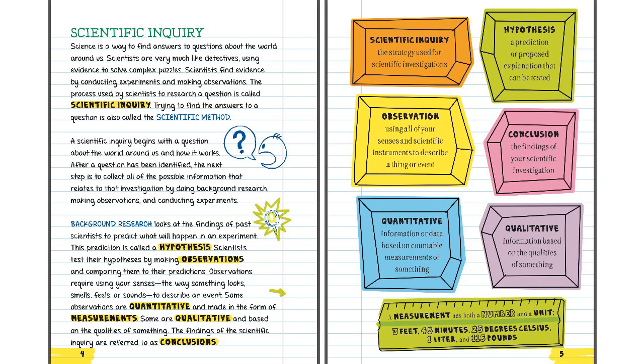Scientific Inquiry: Science is a way to find answers to questions about the world around us. Scientists are very much like detectives using evidence to solve complex puzzles. Scientists find evidence by conducting experiments and making observations. The process used by scientists to research a question is called scientific inquiry. Trying to find the answers to a question is also called the scientific method.